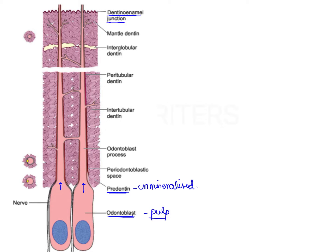Regarding the surrounding lining of dentinal tubules, there is peritubular dentin and intertubular dentin. Peritubular dentin is the dentin which immediately surrounds the dentinal tubule. Intertubular dentin denotes the portion of dentin present between two dentinal tubules — it is the portion present between the zones of peritubular dentin. These are the two important types of dentin covering the dentinal tubules.